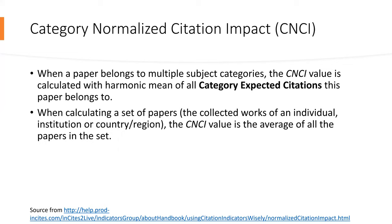It is important to mention that Category Normalized Citation Impact accounts for multiple subject categories. When a paper belongs to multiple subject categories, the CNCI value is calculated as the harmonic mean of all category expected citations that the paper belongs to.